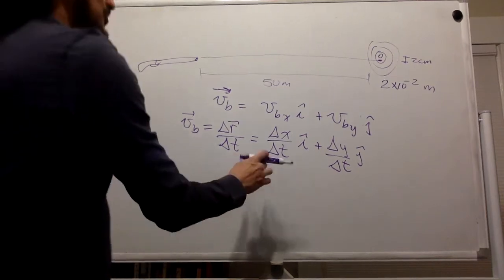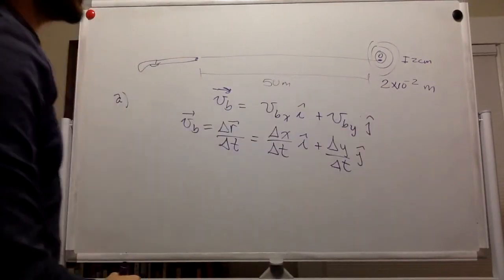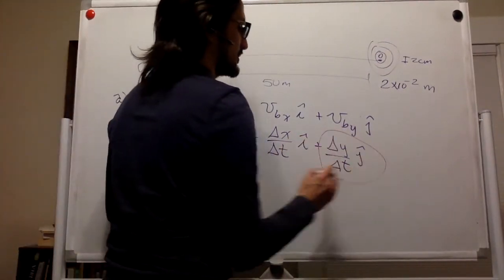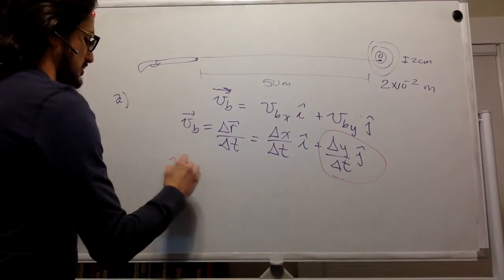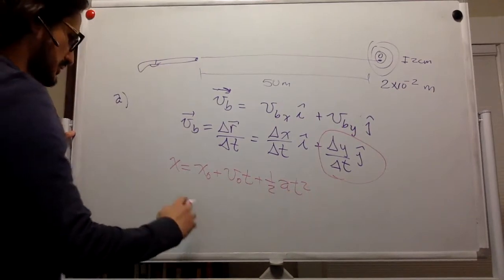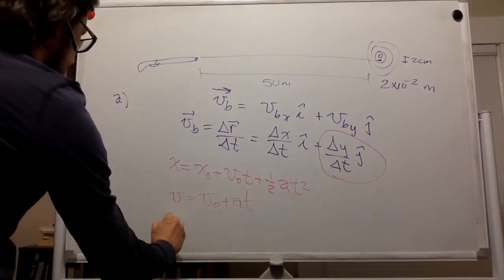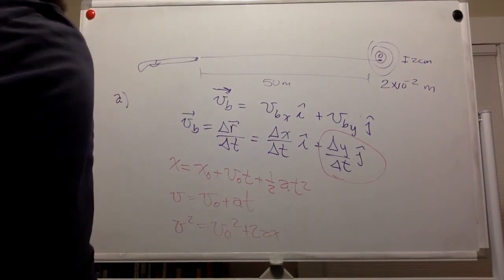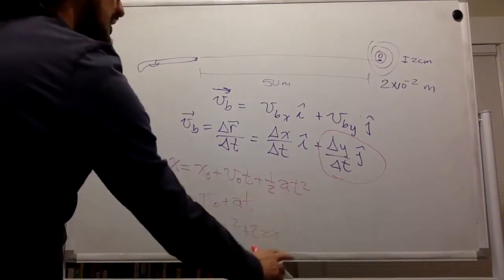We don't know the time it takes for the bullet to travel this distance, so we'll calculate it using the y-component with our kinematic equations. There are three kinematic equations we can use, and the acceleration is g, the acceleration due to gravity.